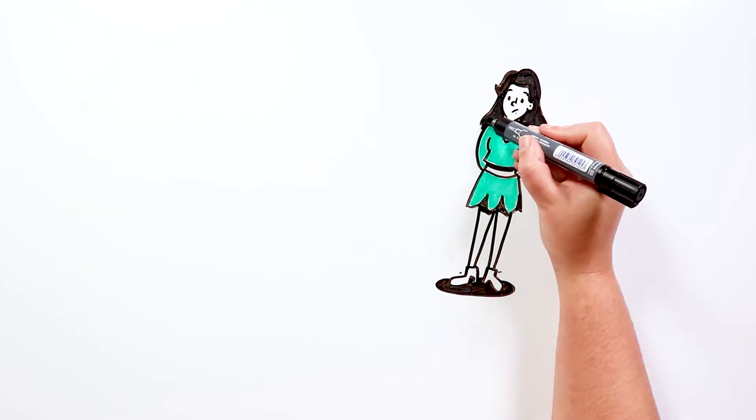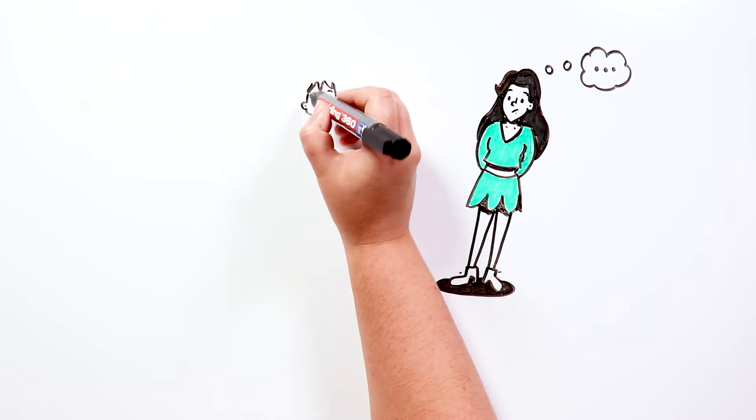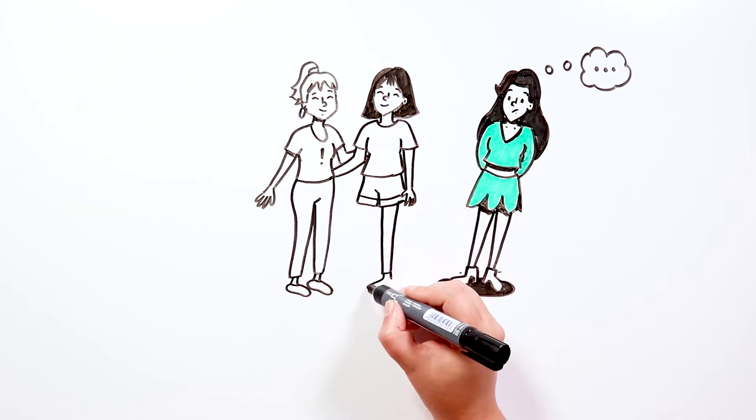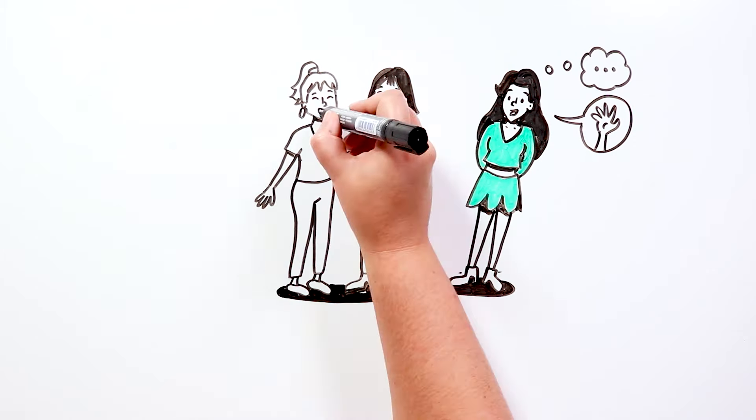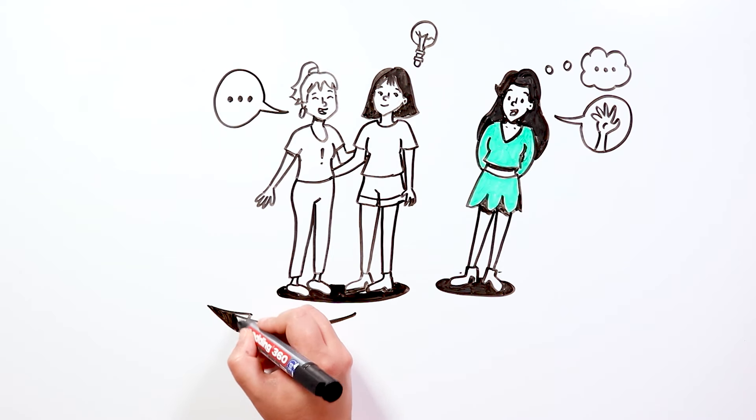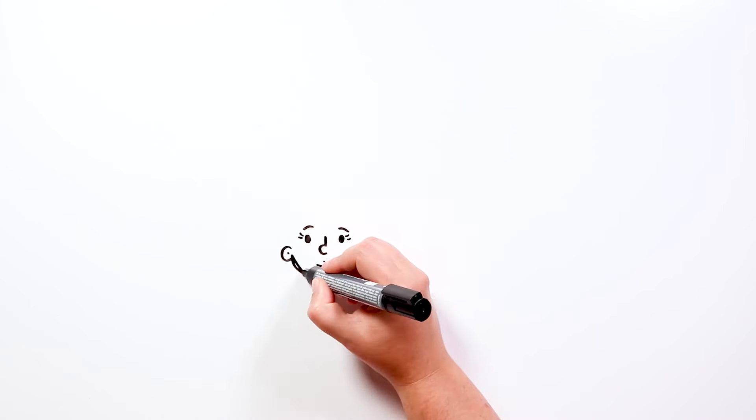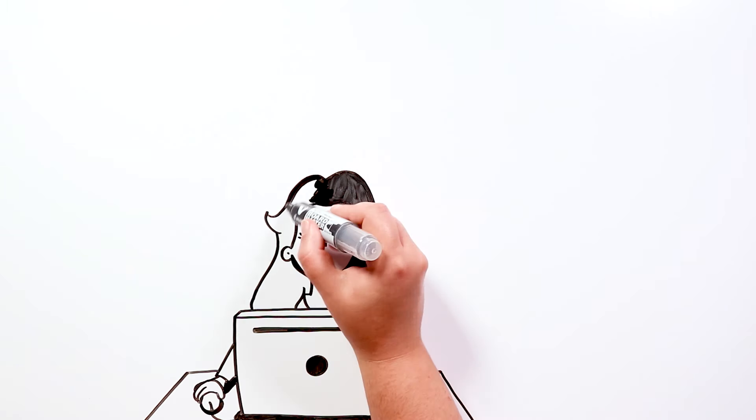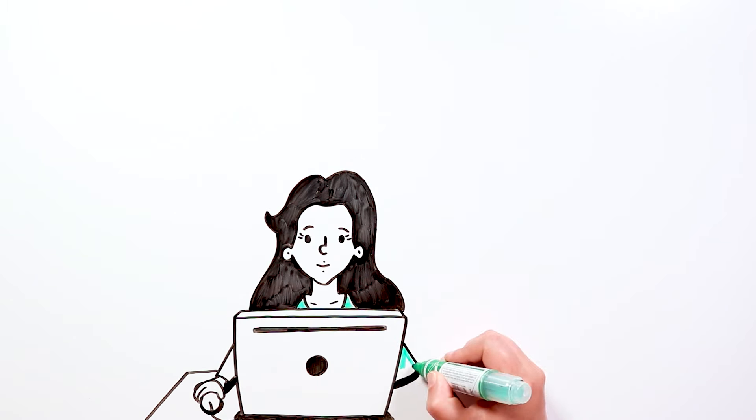At first, no classmate approached her. She wasn't worried, but she got bored during breaks, so she tried to approach a couple of girls who seemed nice to her. They were friendly and answered her questions, but when they saw an opportunity, they ran away. So she began to spend her breaks in the computer classroom. There, she found a sort of quiet place where she could have fun with her video games or study. No one bothered her.